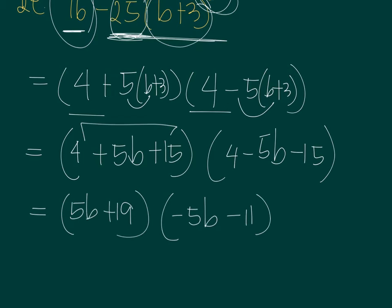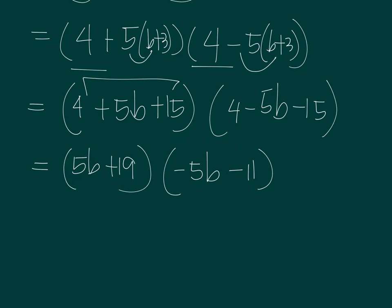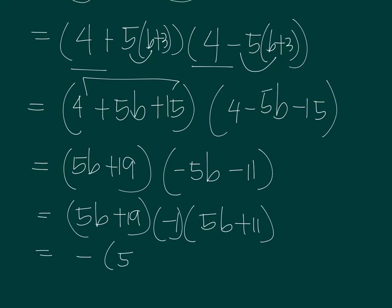So you might have written your answer in this form, like 5B plus 19, and the negative, so you have 5B plus 11, or, so there's a minus sign, there's a minus 1, or you have negative of 5B plus 19 times 5B plus 11. So this, any of these two, so this or this will be correct.